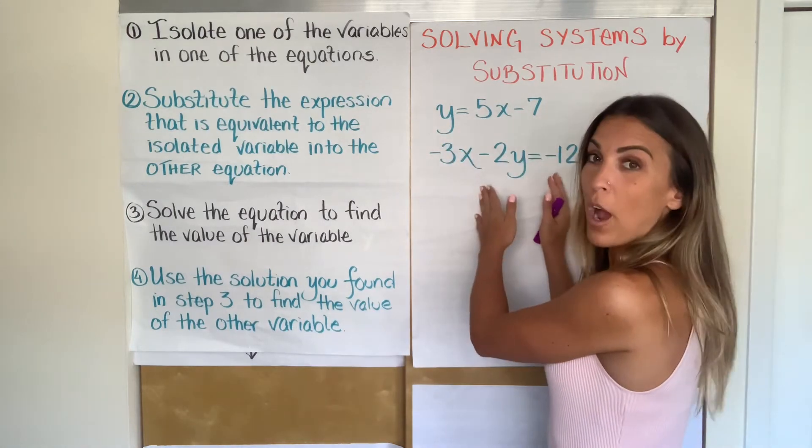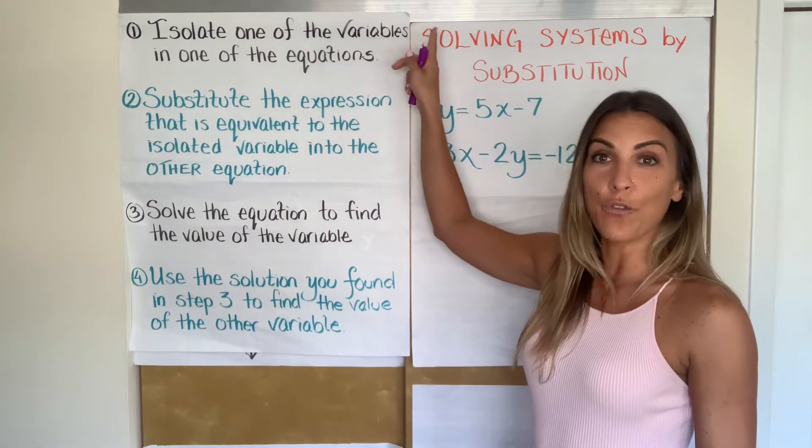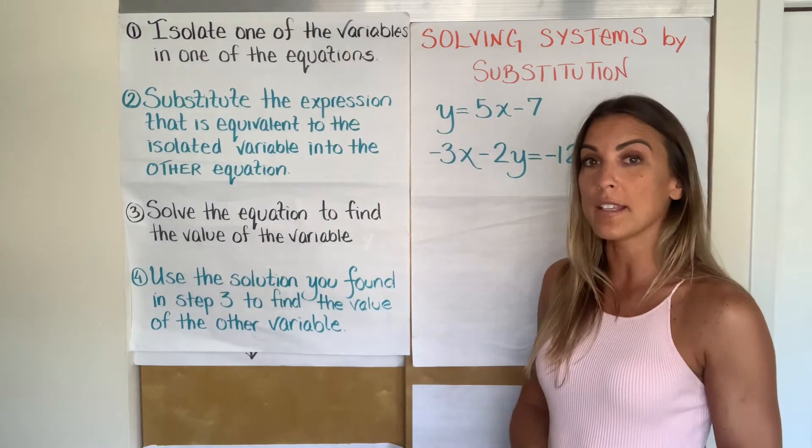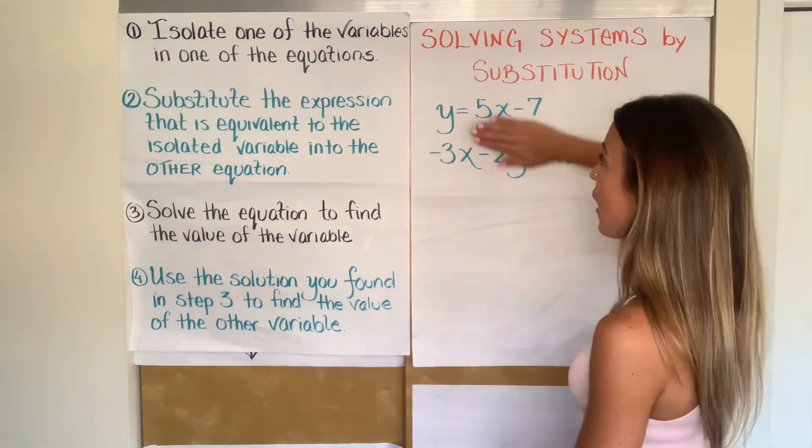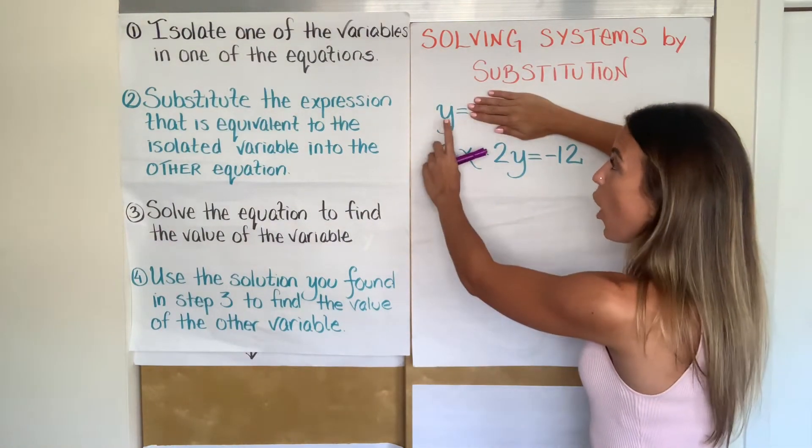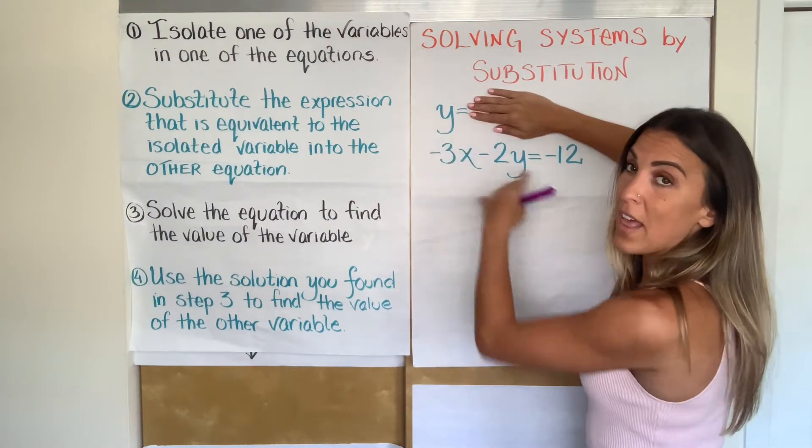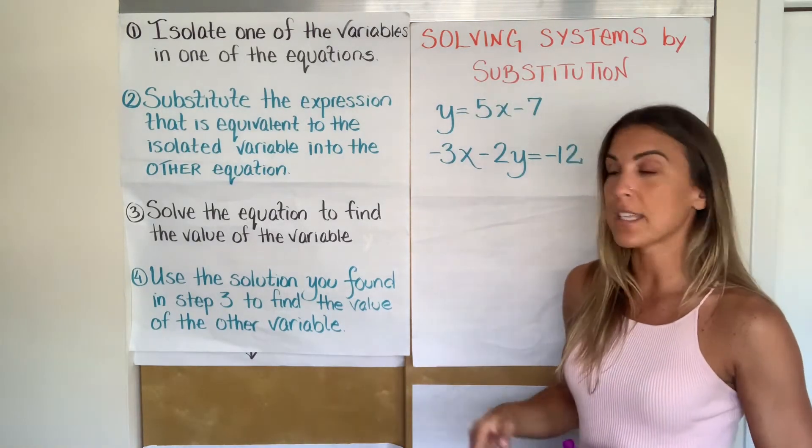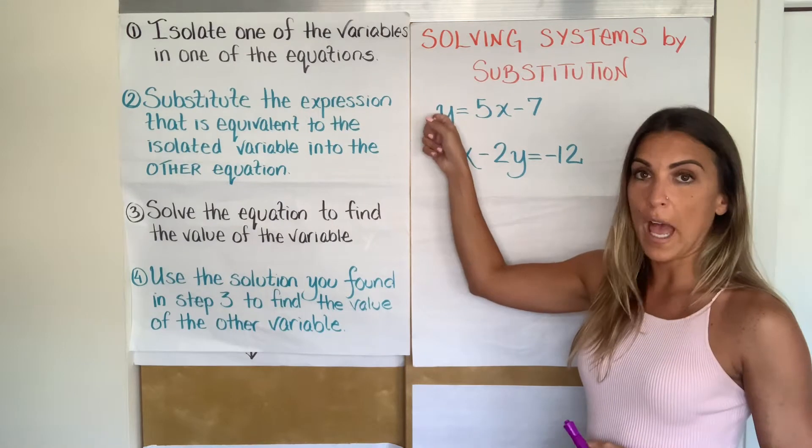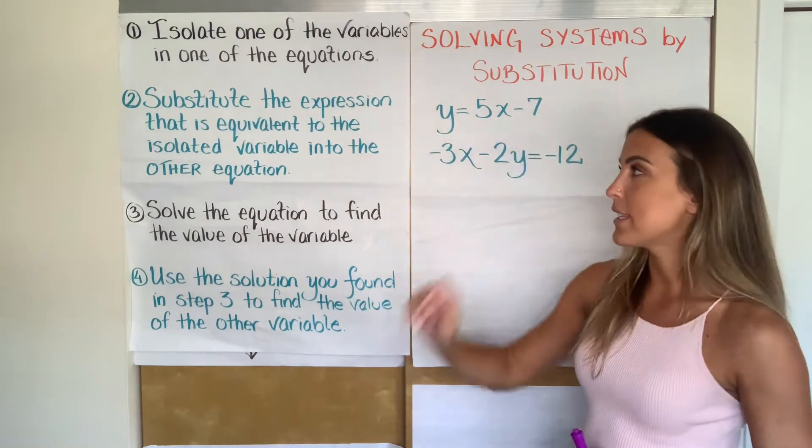And hopefully you realize that it's Y in the top equation because it's actually already isolated. So in this problem, step one is done for us. There's nothing that I need to do except to recognize which variable is isolated. If I cover the other side of the equal sign, Y is alone on the left side. And that's what I wanted. So step one, done. It's isolated.